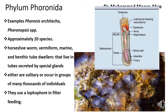Let's start. The examples of Phylum Phoronida are Phoronis architecta and Phoronis species. There are 20 species described in the world. As we commonly call this phylum, they are known as horseshoe worms, especially found in the benthic region.